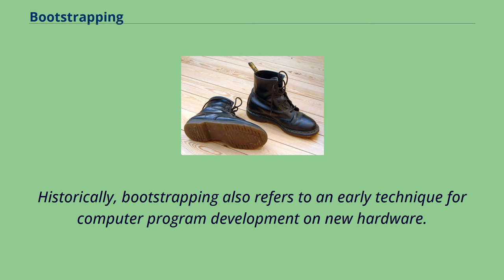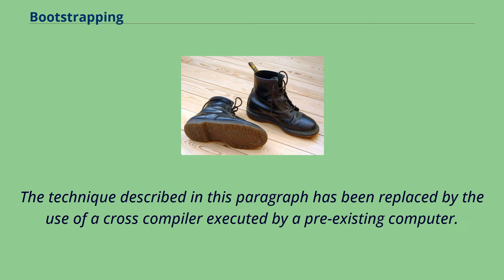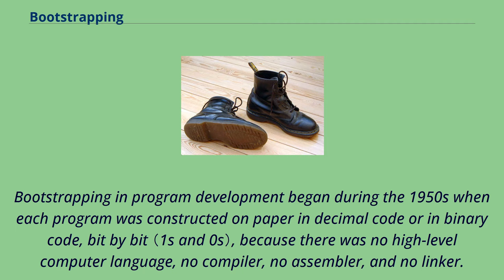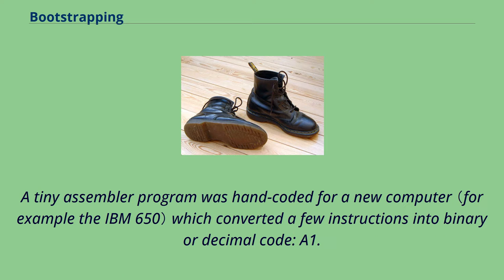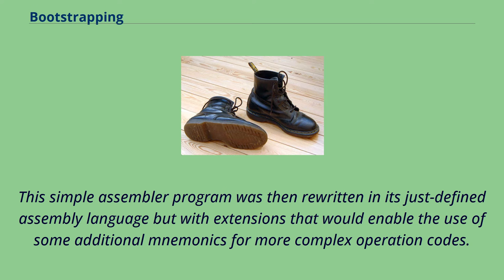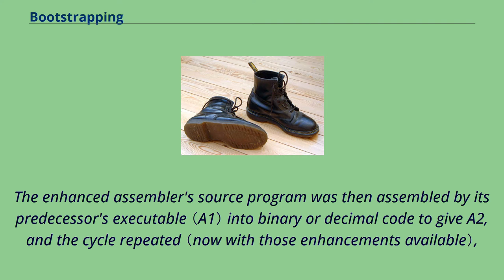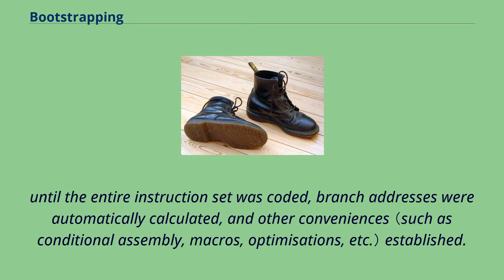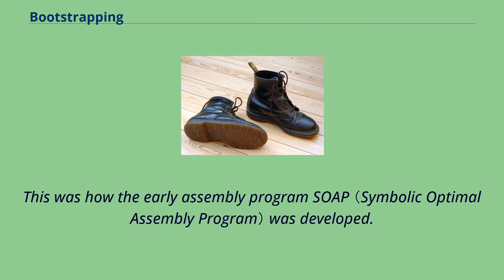Historically, bootstrapping also refers to an early technique for computer program development on new hardware. This technique has been replaced by the use of a cross-compiler executed by a pre-existing computer. Bootstrapping in program development began during the 1950s when each program was constructed on paper in decimal code or binary code, bit by bit, because there was no high-level computer language, no compiler, no assembler, and no linker. A tiny assembler program was hand-coded for a new computer which converted a few instructions into binary or decimal code (A1). This simple assembler program was then rewritten in its just-defined assembly language but with extensions that would enable the use of some additional mnemonics for more complex operation codes. The enhanced assembler source program was then assembled by its predecessor's executable into binary or decimal code to give A2, and the cycle repeated, until the entire instruction set was coded, branch addresses were automatically calculated, and other conveniences established. This was how the early assembly program SOAP was developed.